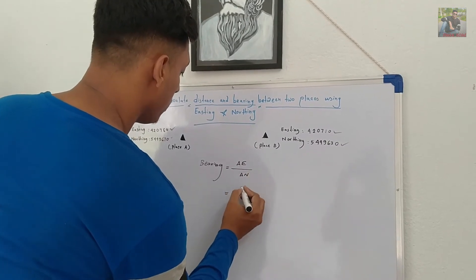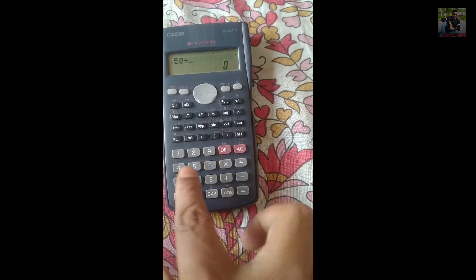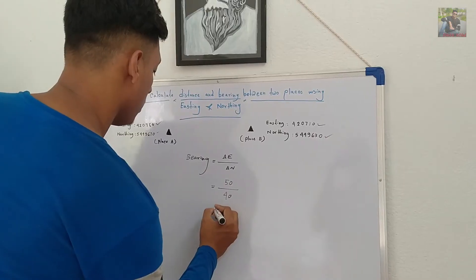Now, I am inputting the value. E is 50 and N is 40. And the result is 1.25.